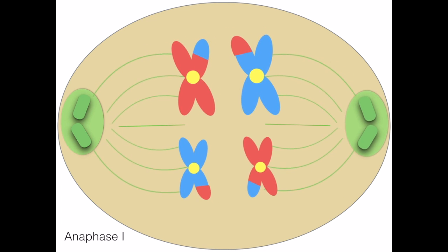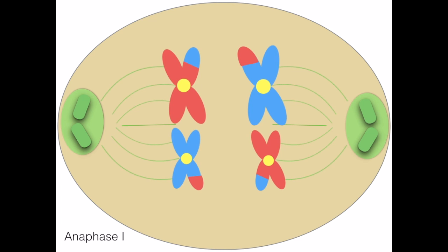During anaphase 1, the homologous pairs split and are pulled to opposite sides of the cells by the spindle fibers.